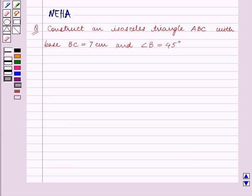Hello and welcome to the session. In this session we will discuss the following question: construct an isosceles triangle ABC with base BC equal to 7 cm and angle B equal to 45 degrees.